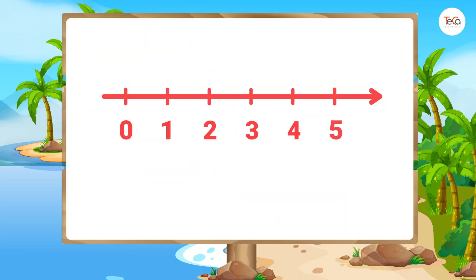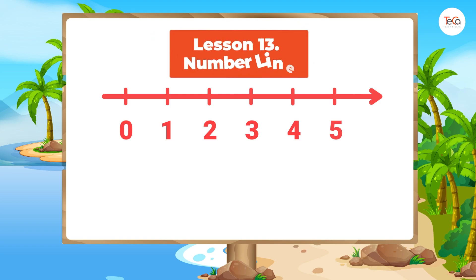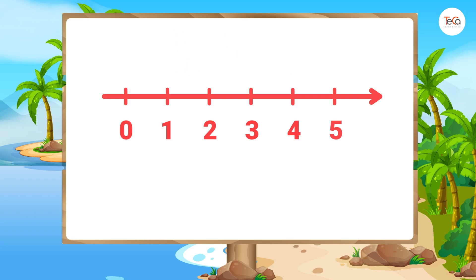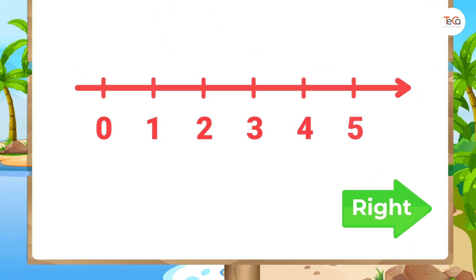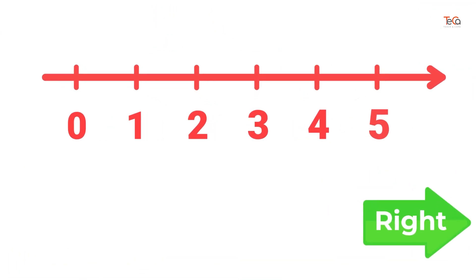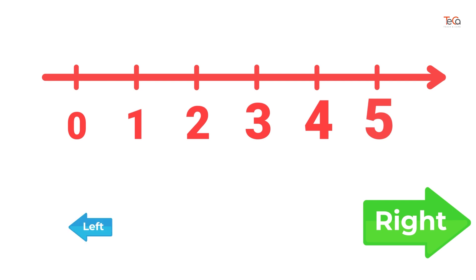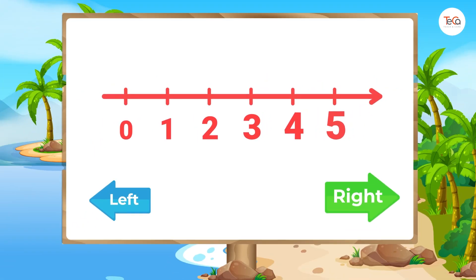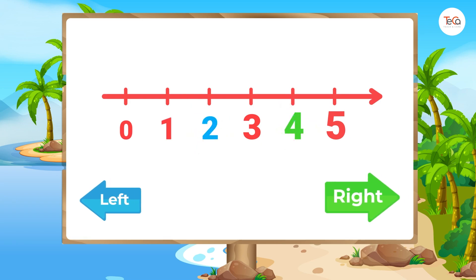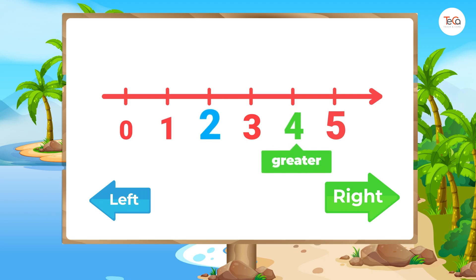This is the number line you learned in the last lesson. Do you know that a number to the right is greater than a number to the left? For example, number 4 is to the right of number 2, so 4 is greater than 2.